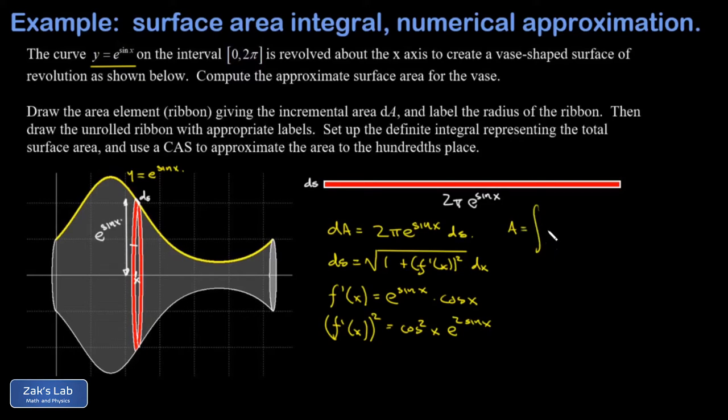Setting up the area integral - that's the sum of all contributions, the integral of all the dA's. Plugging in the formula: A = ∫ 2π·e^(sin x)·√(1 + cos²x·e^(2 sin x)) dx, from x = 0 to x = 2π. We're looking at an integral that has no analytic solution, so we're asked to use a computer algebra system to approximate the area to the hundredths place.